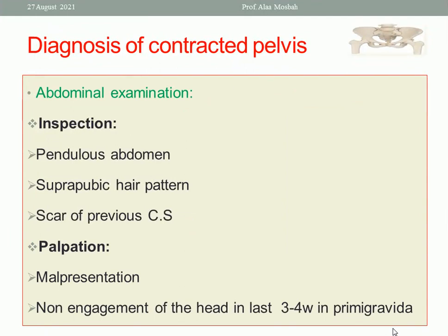On abdominal examination by inspection, you may see a pendulous abdomen or a suprapubic hair pattern of android type — hair reaching the umbilicus with a triangular pubic hair pattern with its apex high up and base down. There may also be a scar from a previous caesarean section, possibly due to pelvic abnormalities. On palpation, malpresentation is common, and non-engagement of the head is common. We know that engagement of the head in a primigravida normally occurs in the last three to four weeks of pregnancy.